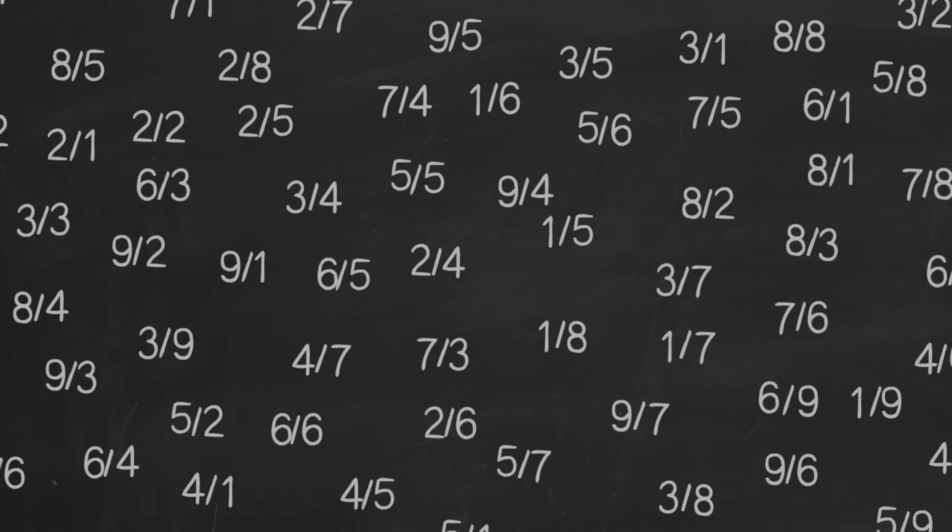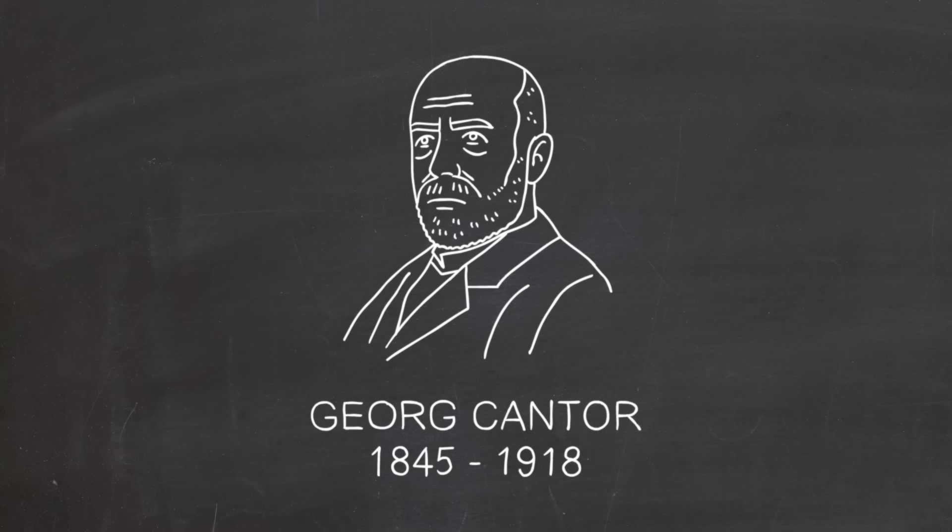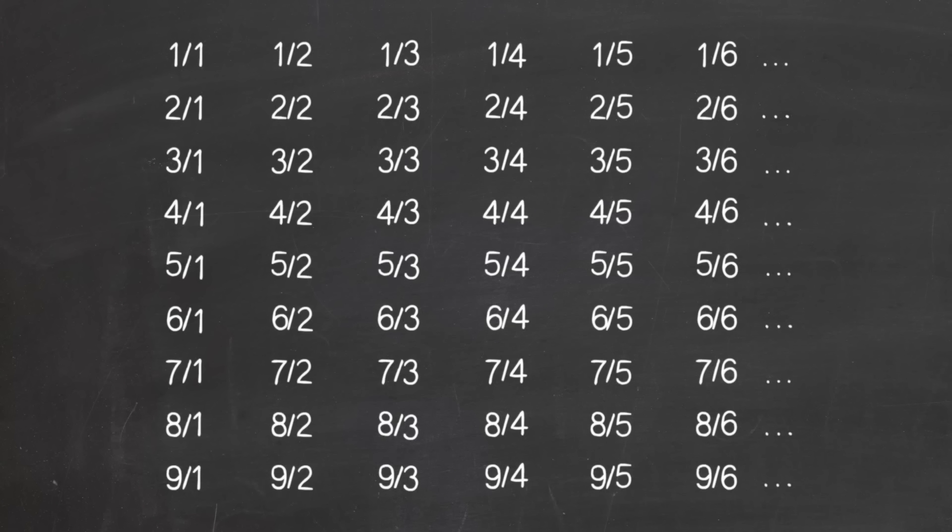Can you make a list of all the fractions? This might be hard. There are a lot of fractions, and it's not obvious what to put first, or how to be sure all of them are on the list. Nevertheless, there is a very clever way that we can make a list of all the fractions. This was first done by Georg Cantor in the late 1800s. First, we put all the fractions into a grid. They're all there.